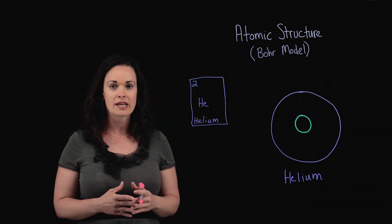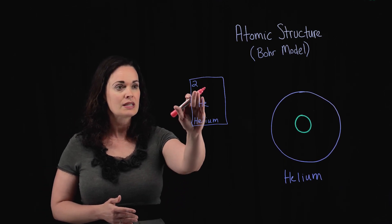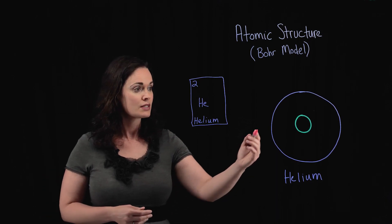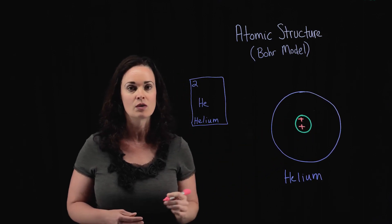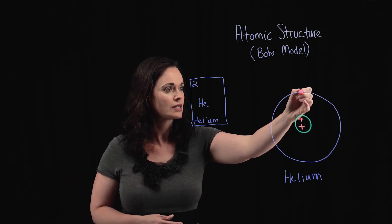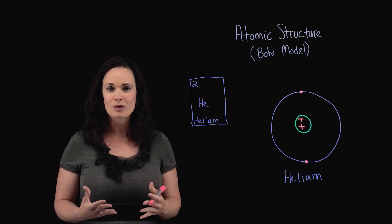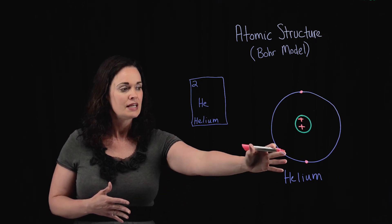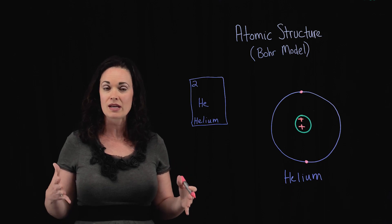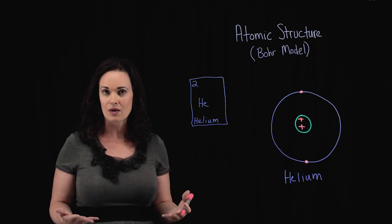Hopefully you paused the video and took a chance at drawing a Bohr model of helium. Let's review it to make sure we're all on the same page. The atomic number of helium is two, so helium has two protons in the nucleus, and because it has two protons it also has two electrons. Both of those electrons go in the first orbital shell. We haven't gotten into actually assigning electrons to orbital shells yet — that's what we'll cover in the next video.